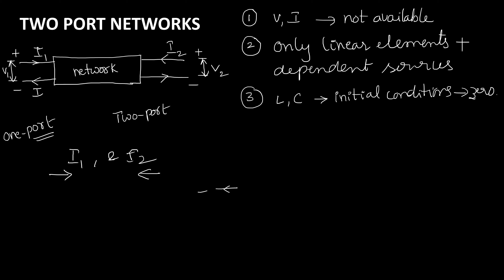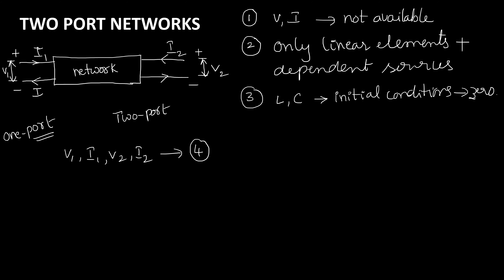Apart from that point, remember the first three assumptions mentioned. Coming to the types of networks — before that, let me tell you there are four variables: V1, I1, V2, and I2. These are very important variables. Out of these four, two variables will be considered as dependent variables and two as independent variables. In two-port network concepts, dependent variables will be expressed in terms of independent variables. Based on this concept, we can have different combinations.